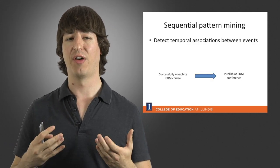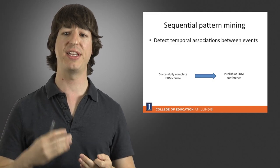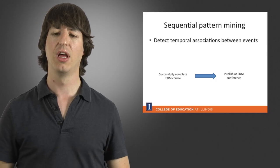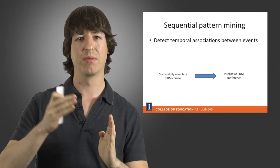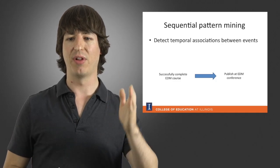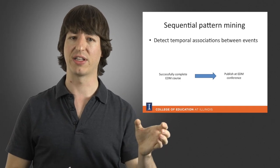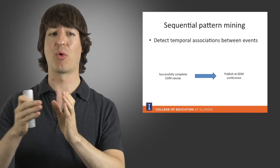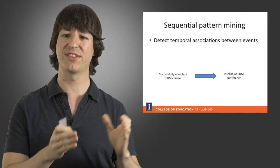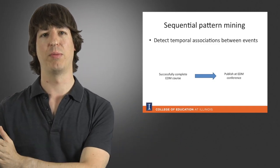We also have sequential pattern mining, which is similar to association rule mining but with the added component that there are temporal associations between the events — there's a time component to the relationship. For example, if a student who took the educational data mining class succeeded in completing the class, then they may be more likely to later publish at an educational data mining conference. There's a clear time component: you need to succeed at the course first, and then you will publish.